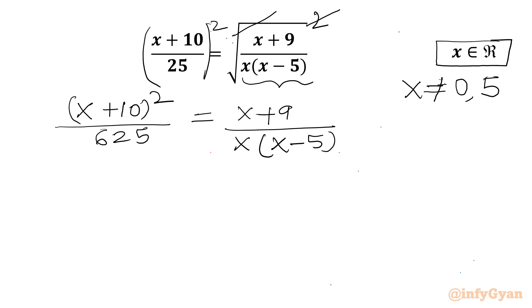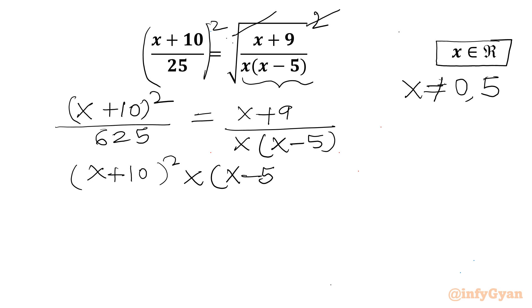Now I can cross multiply: (x + 10)² times x times (x minus 5) equals 625 times (x + 9).